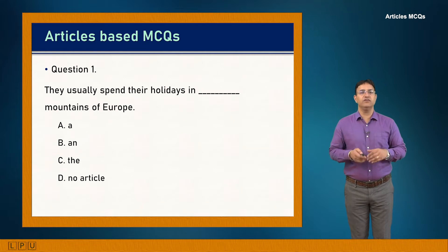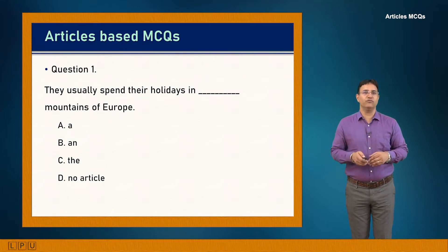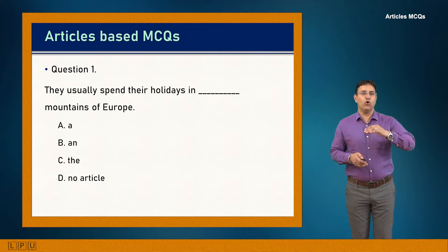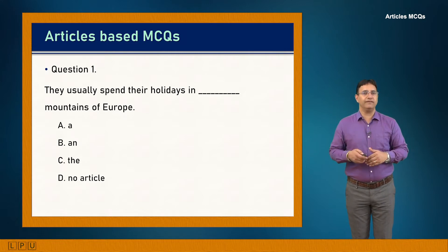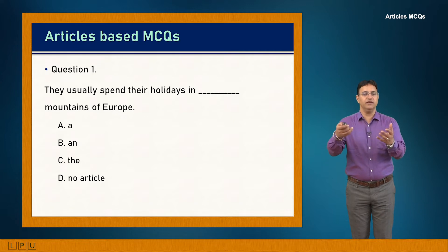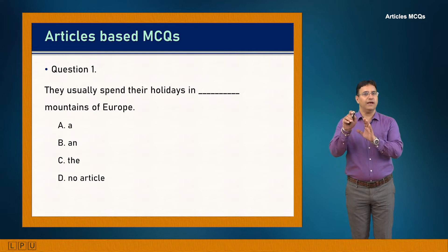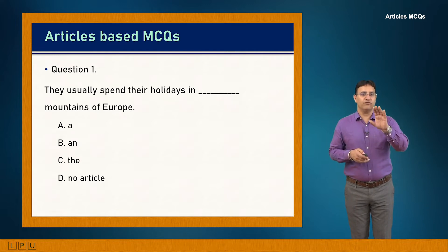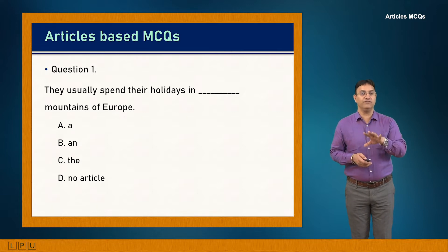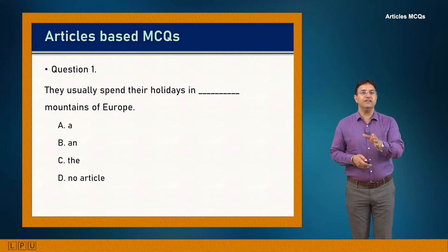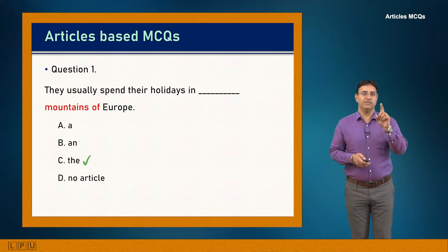Question 1: They usually spend their holidays in dash mountains of Europe. Since they go there repeatedly in a certain cycle, this becomes an identified noun, so a definite article is needed. The answer is C: 'They usually spend their holidays in the mountains of Europe.'